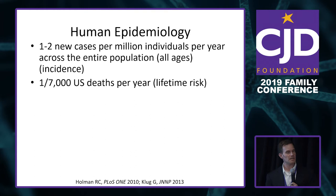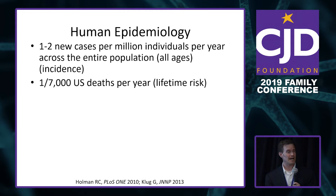It's not a common disease, but one in 7,000 — if you think about going to a football game with 20,000 people, you'd expect about two to three people in that stadium will eventually get prion disease. Neurologists, ophthalmologists, psychiatrists, and internists will certainly see this disease during their career.